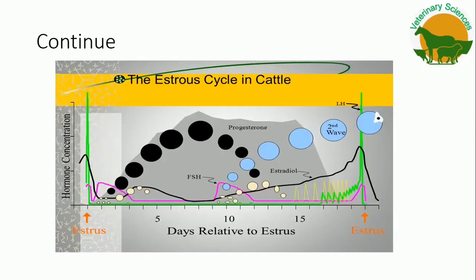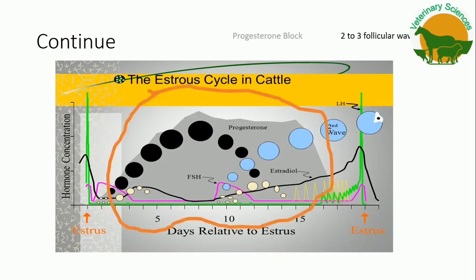In this slide, observe that during the P4 peak, two to three follicular waves occur, but the follicle cannot achieve its mature stage due to progesterone block. This P4 block is broken by PGF2 alpha coming from the endometrium, and then a new cycle starts.